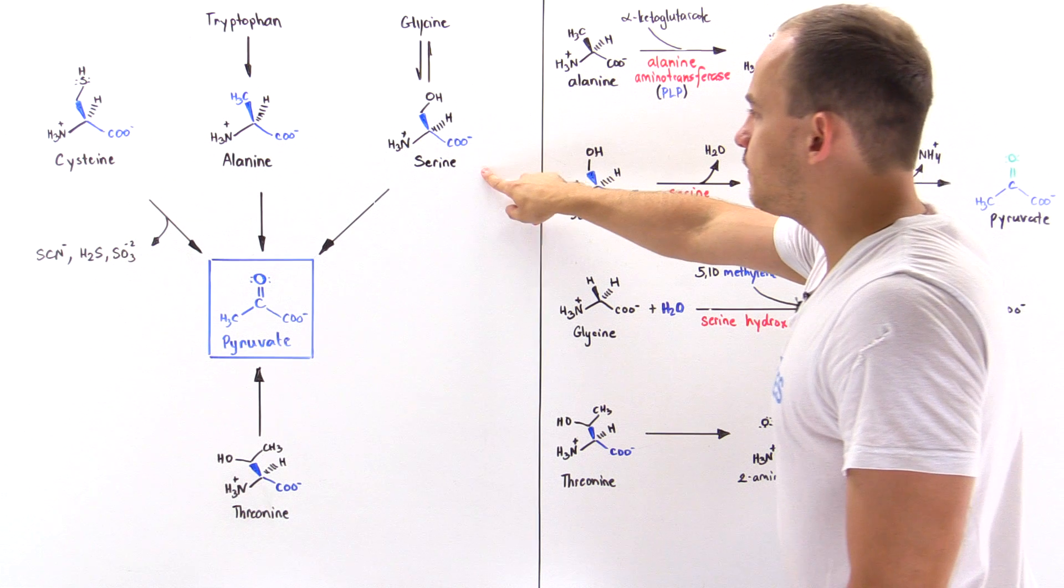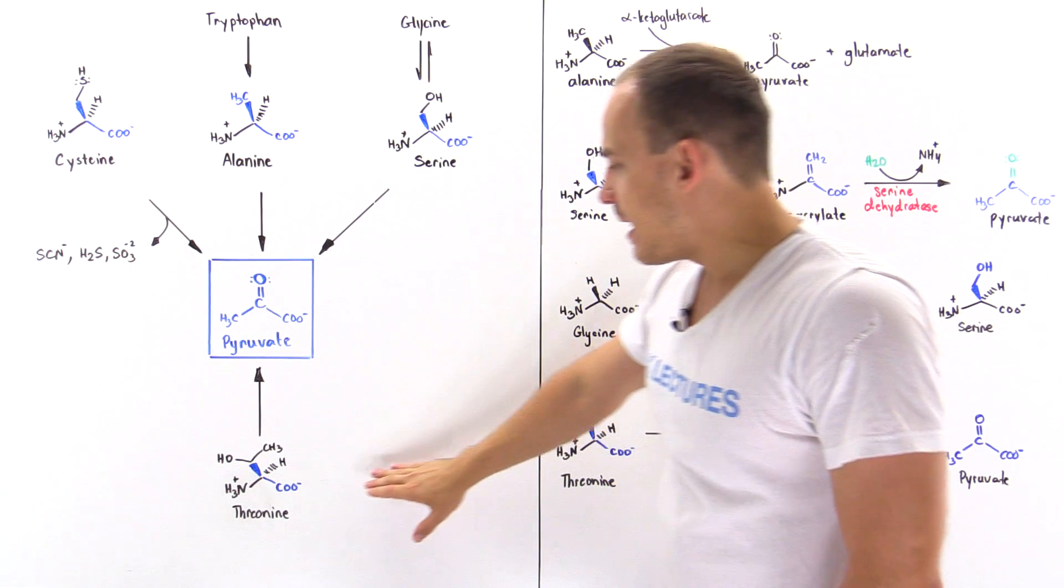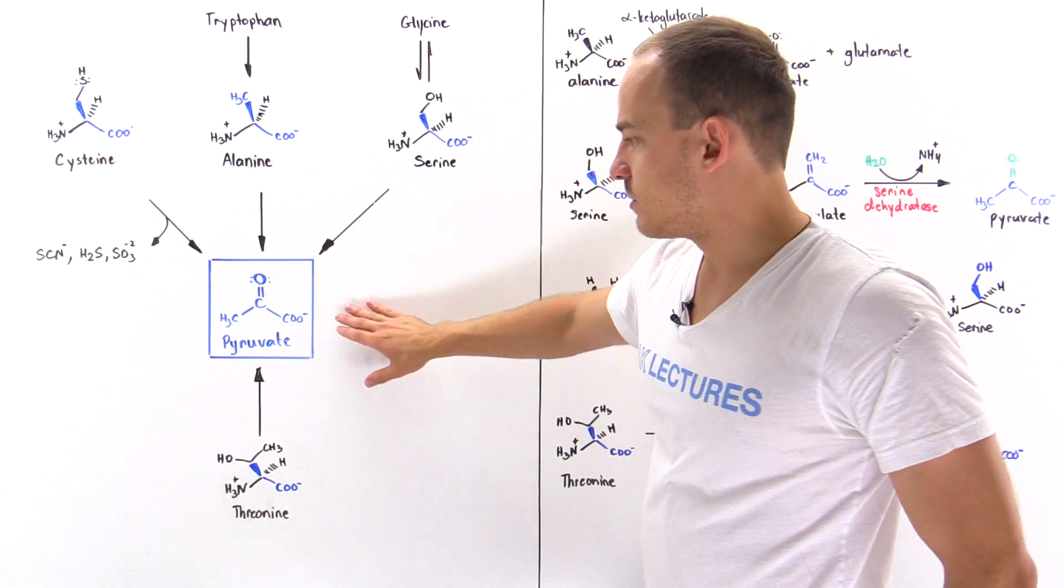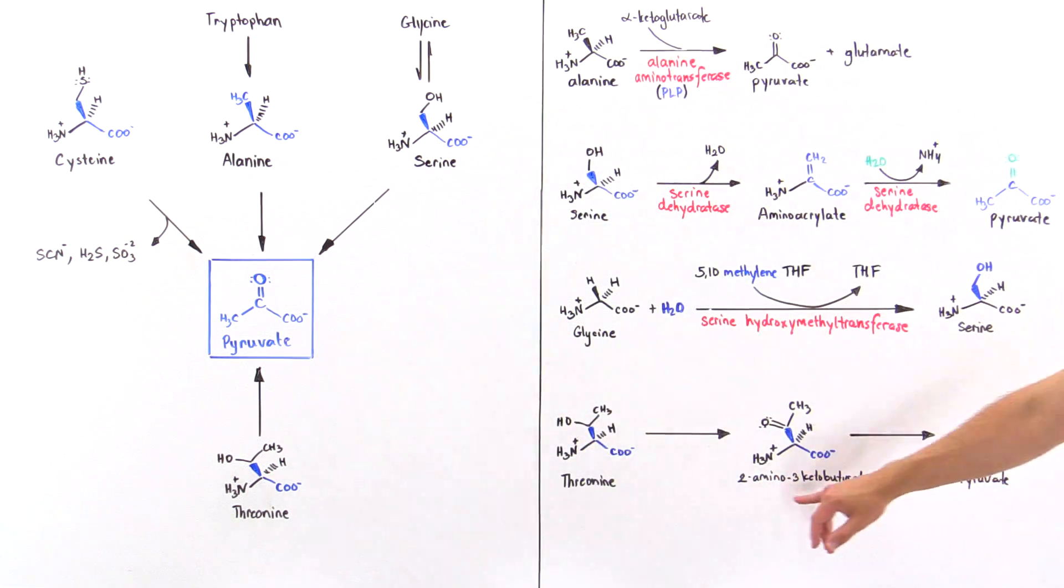Now what about the last one, threonine? Threonine can be transformed into pyruvate via an intermediate molecule known as 2-amino-3-ketobutyrate. First we transform threonine into 2-amino-3-ketobutyrate, and then we transform that molecule into pyruvate.